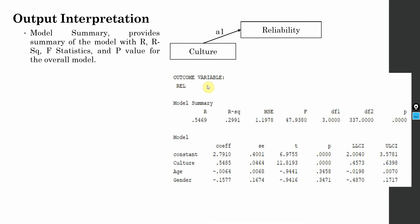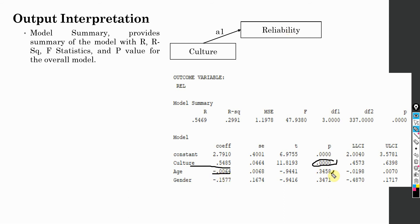The first part of the output has outcome variable reliability — one of your mediators, designated as path A1. Culture: is it significant? Yes, culture has a significant impact on reliability. Age, a covariate: is it significant? No. Gender: is it significant? No.